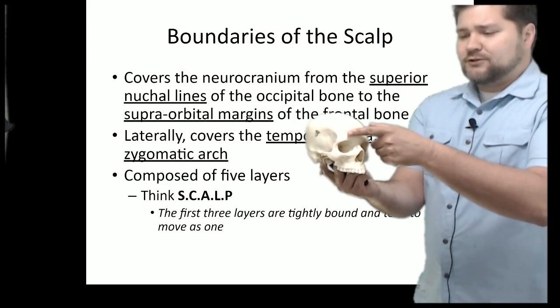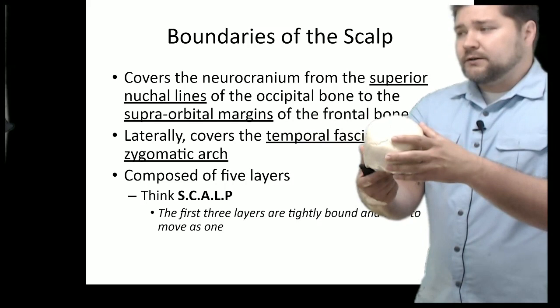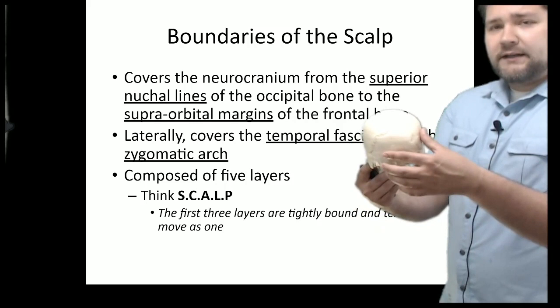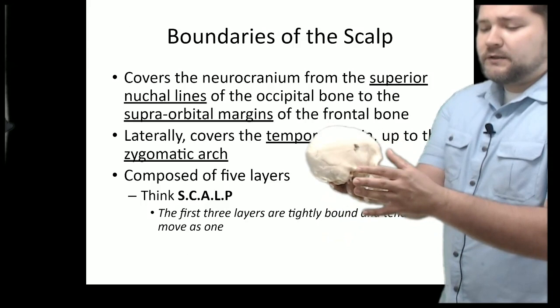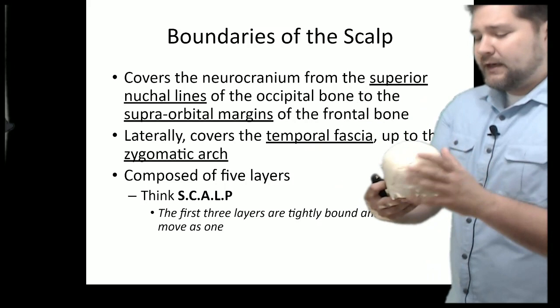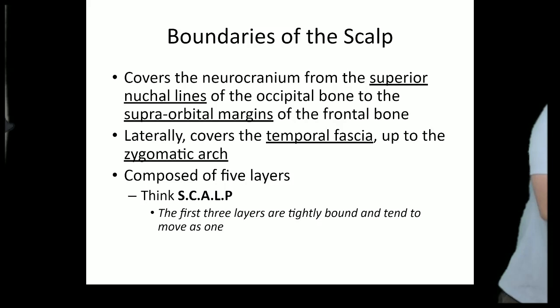When we look at the scalp, the anterior border is the supraorbital margin or ridge — the top of your eyebrows. Posteriorly, there's a nuchal line on the occipital bone, which marks the posterior region of the scalp. Laterally, you can see the zygomatic arches, which make up the lateral borders on either side. That all comprises our scalp region.